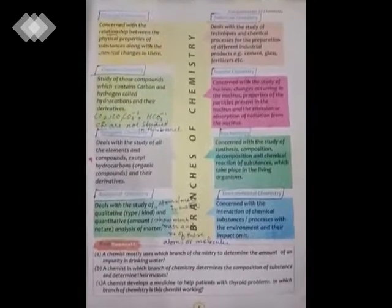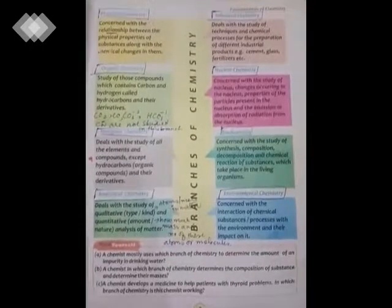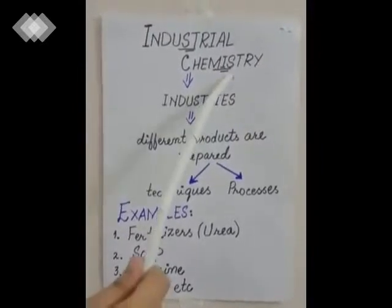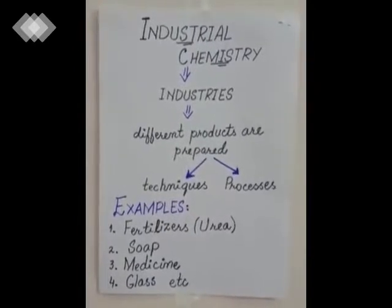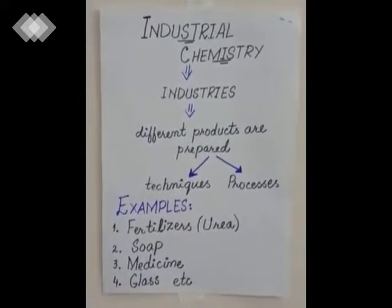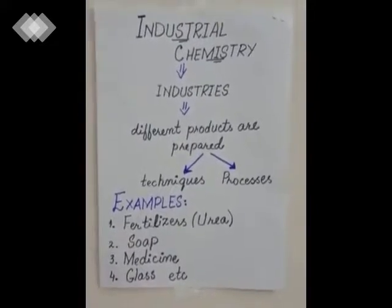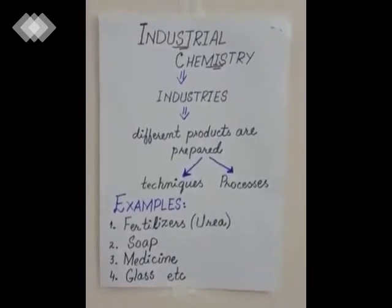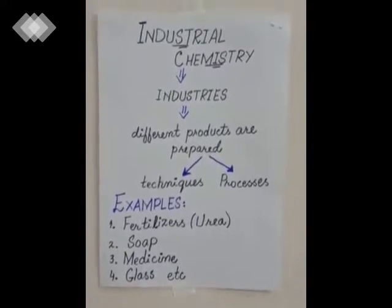For example, cement, glass, fertilizers, etc. The word 'industrial' is derived from the word 'industries.' It means that the chemistry which is involved in industries is studied in this branch. In industries, different products are prepared passing through different techniques and processes. The study of those techniques and processes used for the production of different industrial products is called industrial chemistry.